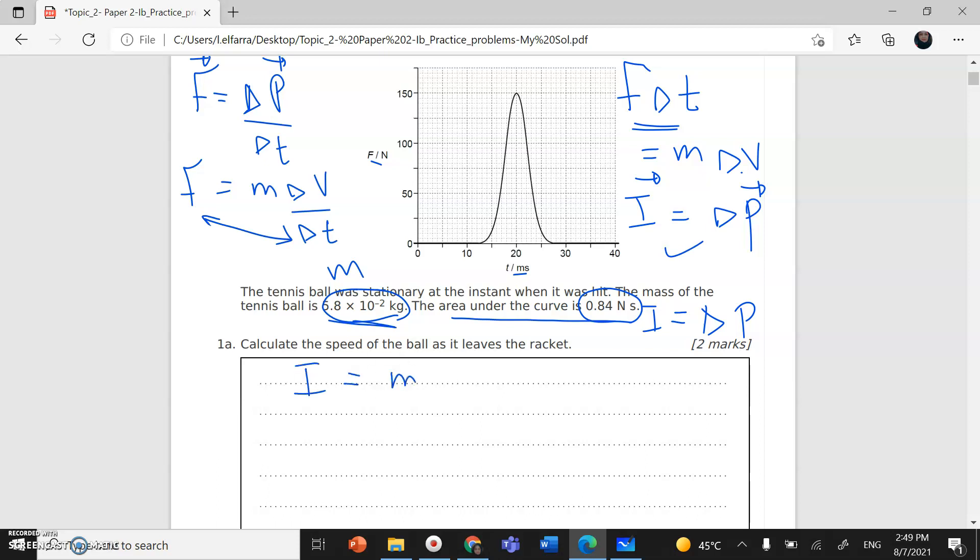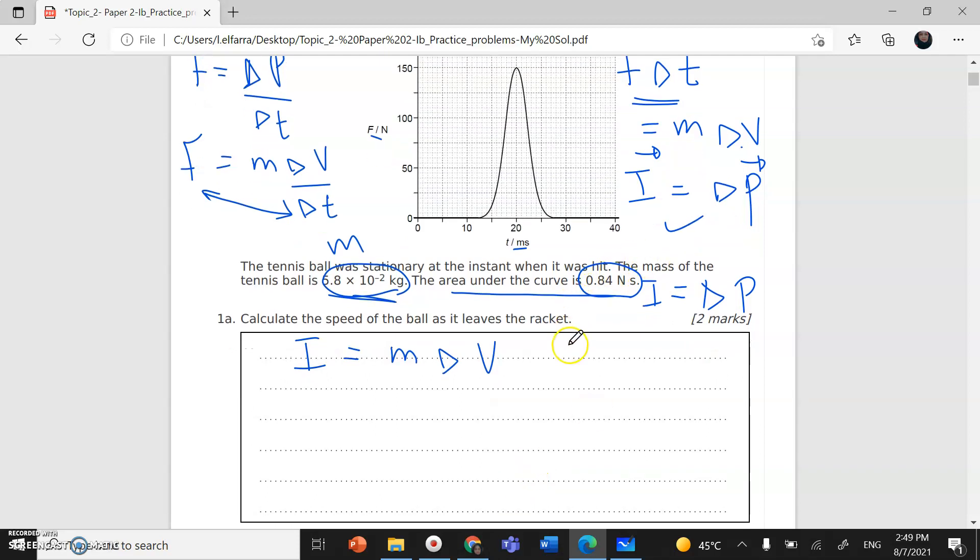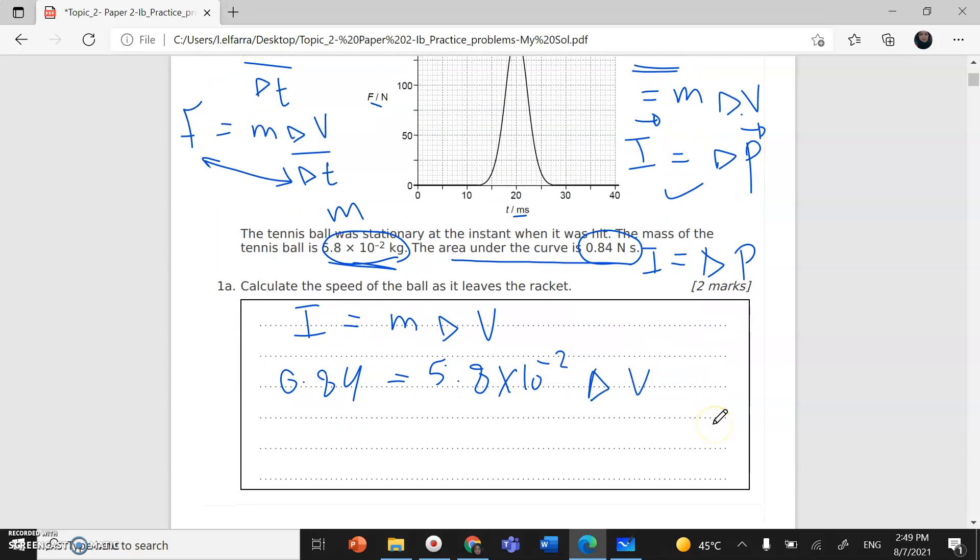If I wrote this equation here, impulse equals change in momentum, which is mass times change in velocity. The value of the impulse is 0.84 equals mass, which is 5.8 times 10 to the power negative 2, times change in velocity. I need the change in velocity, so I can divide both sides by the mass value, 5.8 times 10 to the power negative 2.